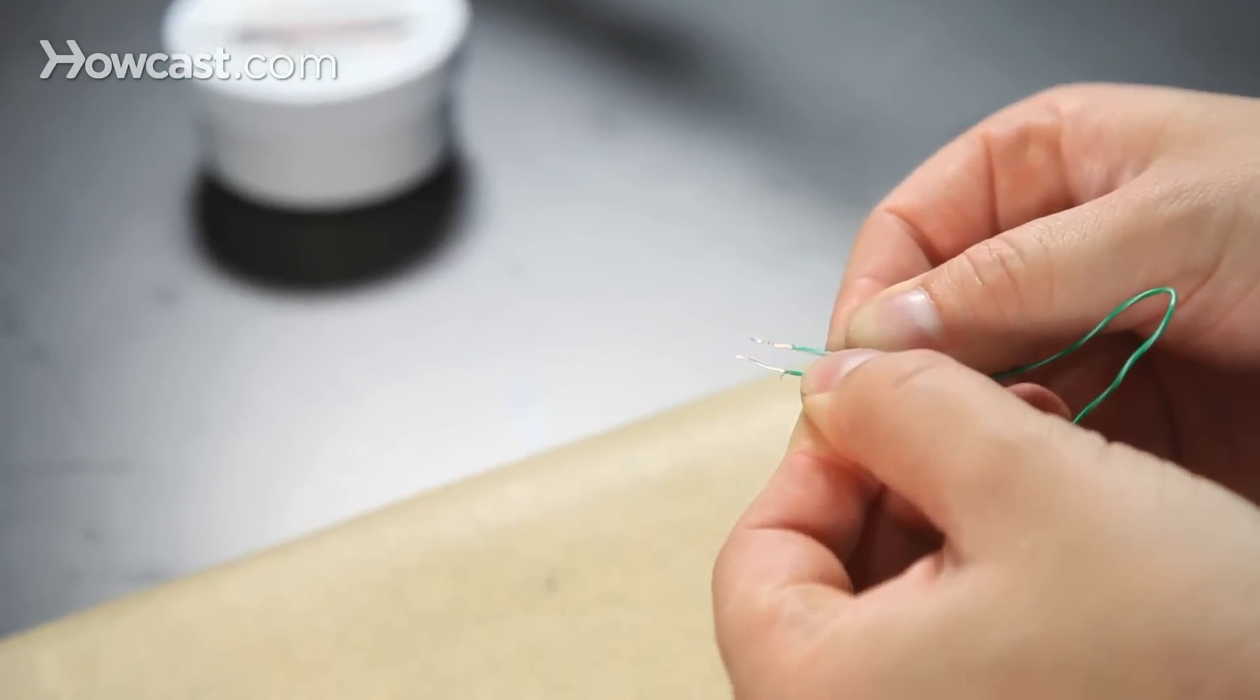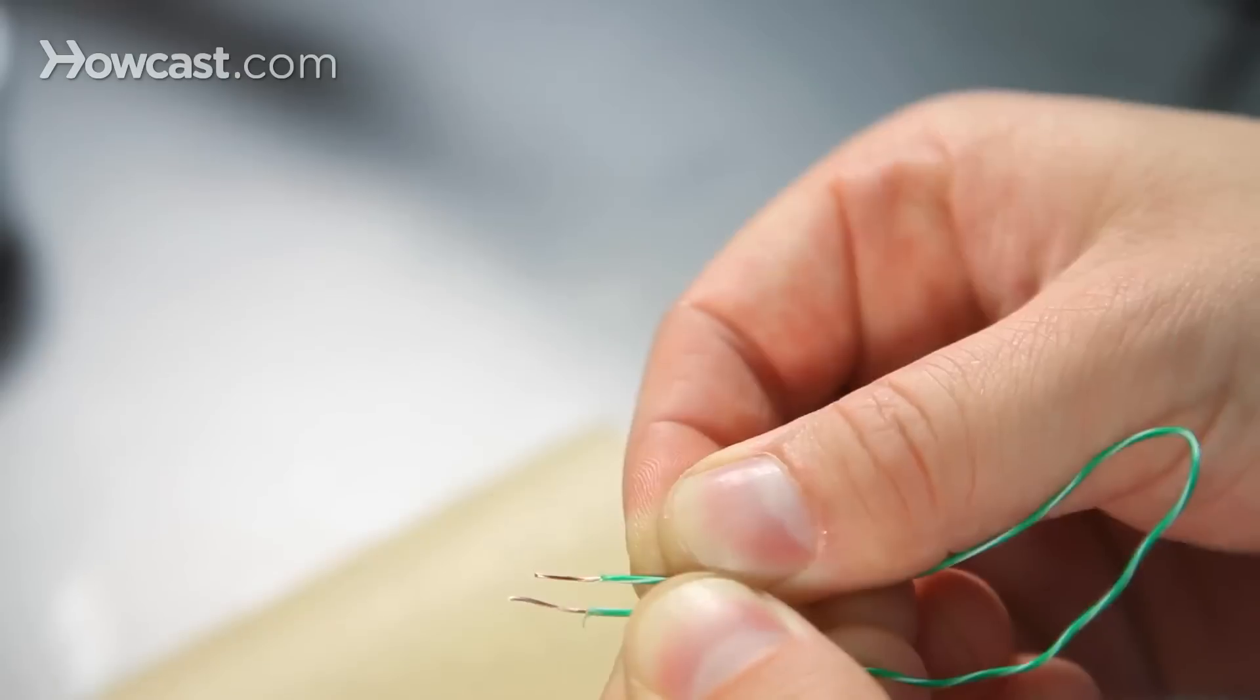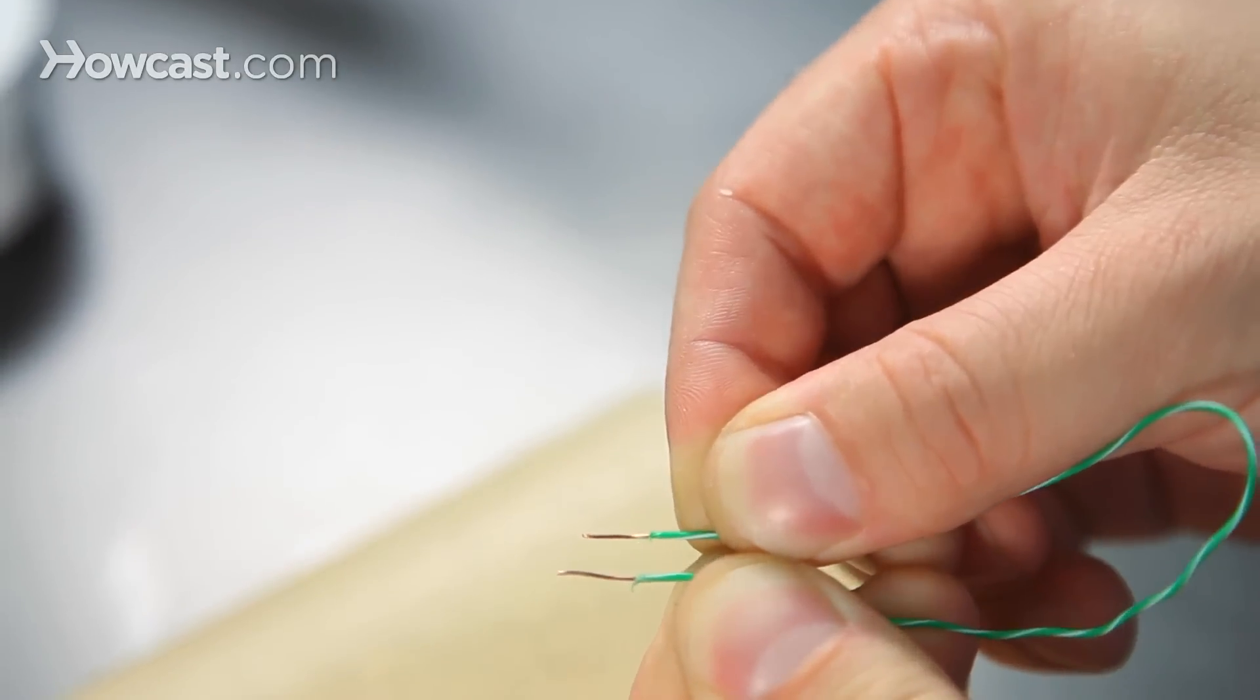By sanding, you can see that the copper appears much, much different. It's a little bit shinier, and the color is different.